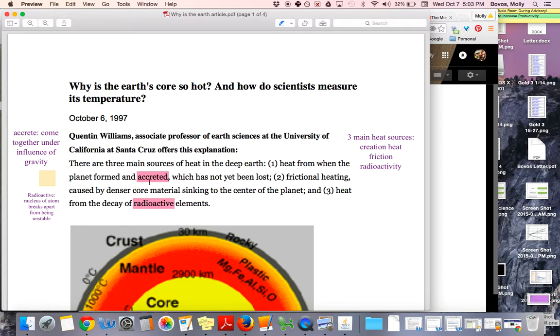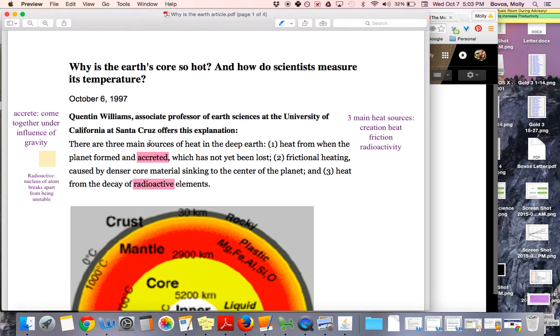So what you're supposed to be highlighting in this particular article is any term that you don't know the definition of. So we started reading this article in class and found there are three main sources of heat in the deep earth. Heat from when the planet formed and accreted, which has not yet been lost, frictional heating caused by dense or core material sinking to the center of the planet, and then heat from the decay of radioactive elements. So as a class, we decided the two terms that we definitely didn't know what accreted meant. And then we had kind of an idea about radioactive, but nobody could really come up with an explanation or define it in their own words. So we looked up both of these terms. And then over here, we entered the definition of those words.